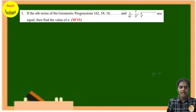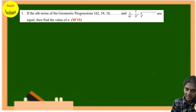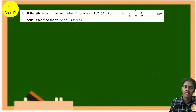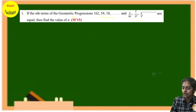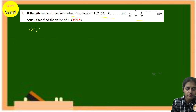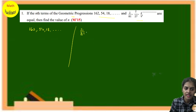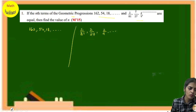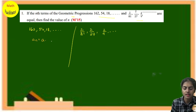The very first question: if the nth term of the geometric progression 162, 54, 18, so on and 2/81, 2/27, 2/9, so on are equal, what are they? The nth terms of these two geometric progressions are equal. The formula for the nth term of any geometric progression is: a_n = a × r^(n−1).